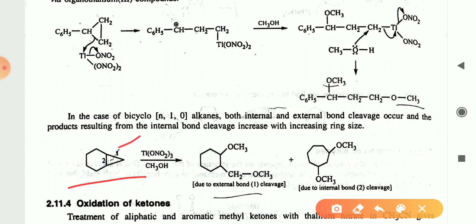For the cycloalkane substrate with fused six-membered and three-membered rings, ring enlargement can occur. Due to external bond cleavage you find a six-membered ring product; due to internal bond cleavage (first and second cleavage) you can find two products — either a six-membered or an eight-membered ring.